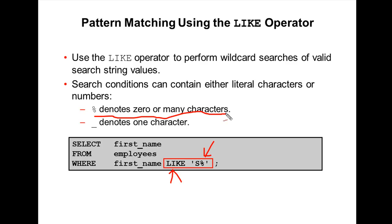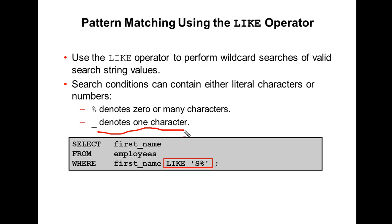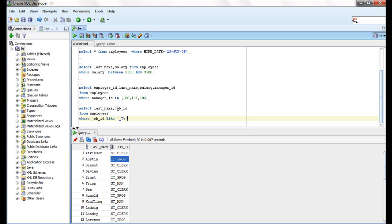For example, I want to retrieve the records whose second character of job_id is capital T. The underscore (_) denotes exactly one character. So the query would be: SELECT last_name, job_id FROM employees WHERE job_id LIKE '_T%' — underscore followed by capital T and percentage.